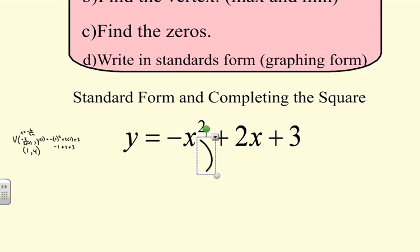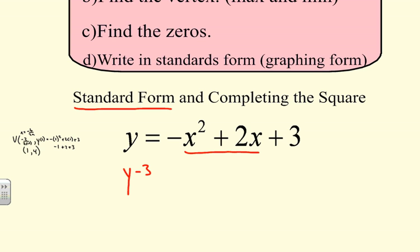Another way to find the vertex is by completing the square. To accomplish this, we want to isolate x and y. We subtract 3 from both sides because our goal is to put the equation in standard form.